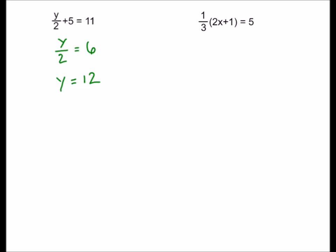The induction booklet multiplies everything by 2 to start with to get rid of the fractions, and that's a perfectly good way to do it as well. Now this second one — a third times the bracket 2x plus 1 equals 5. To get rid of the fraction I'm going to multiply by 3, because times by 3 cancels with times a third. That gives 2x plus 1 on the left and 15 on the right. Subtracting 1 from each side gives 2x equals 14, so x equals 7.